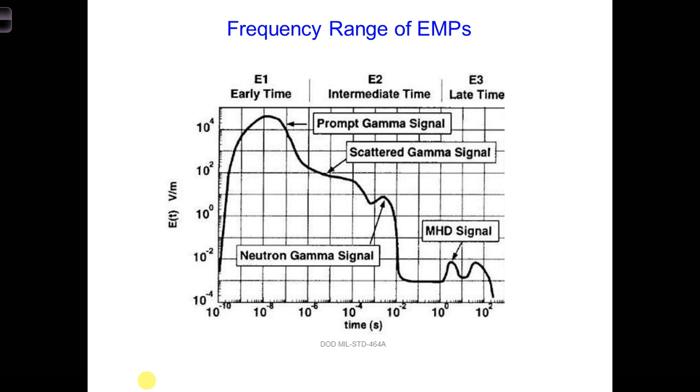Looking up information about EMPs, we can find out that an EMP from a nuclear blast is typically divided up into three time frames: E1, E2, and E3. The E3 component involves the lowest frequencies corresponding to really long wavelengths that are significantly larger than the size of an airplane. So we're going to ignore this component for this design challenge because they won't interact much with the airplane because the wavelengths are so large.